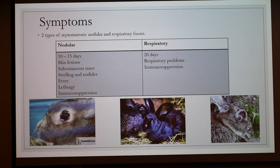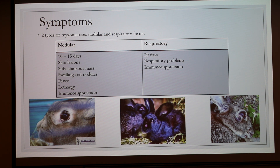The second form is less impressive. The rabbit suffers from respiratory problems, has difficulty breathing, and death comes around the 20th day after infection. With the respiratory form, the rabbit is more susceptible to develop immunosuppression and to get another disease from bacteria. On the pictures you can see nodules around the eyes and the nose.